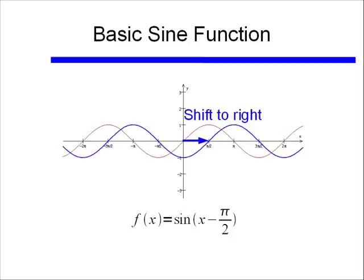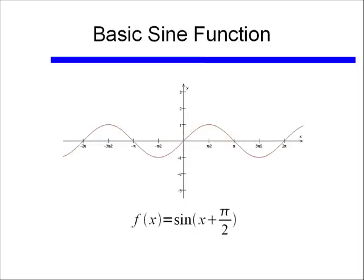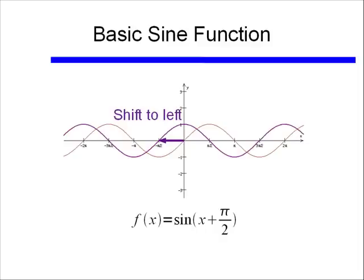Some students are confused because it's sine(x − π/2) and might expect a leftward shift, but it shifts right. If instead we had sine(x + π/2), it would shift π/2 to the left instead of the right.